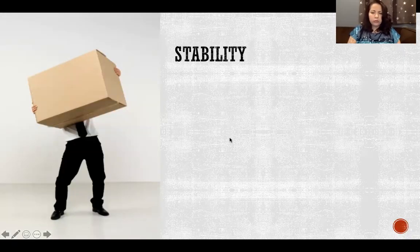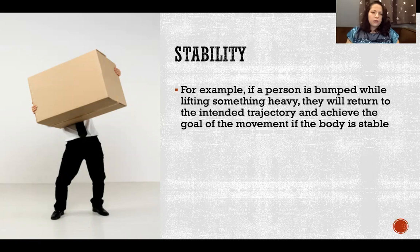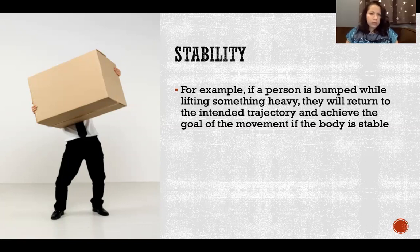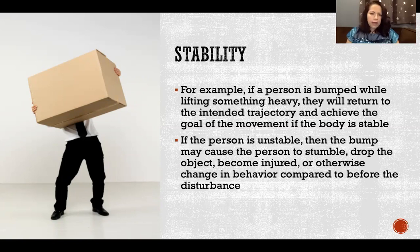In practical terms with the body: let's say somebody is carrying a big box and they get bumped into by someone else. If they are stable, they will return to the intended trajectory and achieve the goal of the movement — maybe they stumble a little bit, but they'll get back up and continue on their original path to set the box down. If they're unstable, when they get bumped they might stumble, drop the box, and get injured. In some way the behavior of this person will be different than what it was before the disturbance.